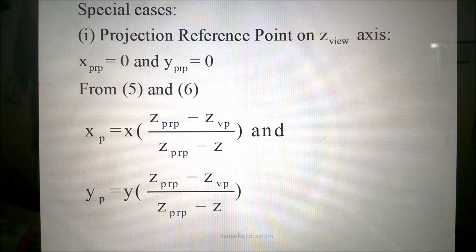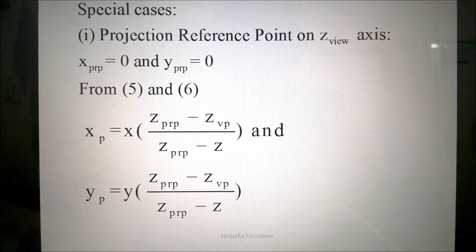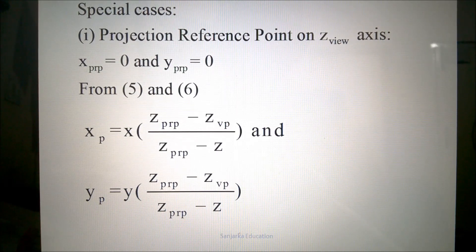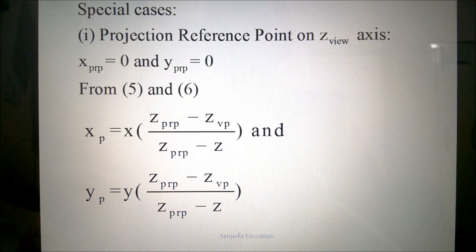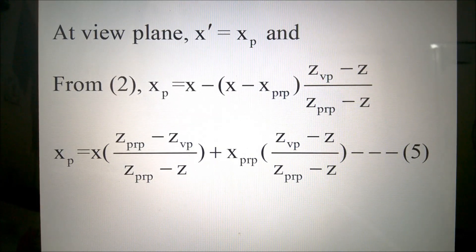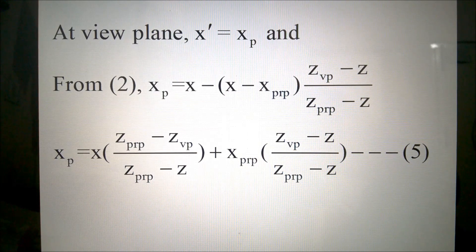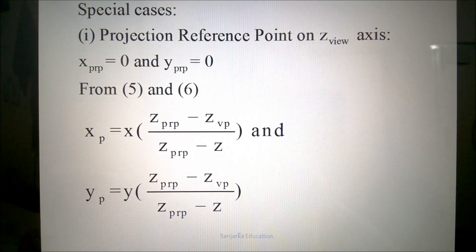Now I will discuss the special cases. The first special case is that the projection reference point is on the Z axis, which is also the viewing axis. On the Z axis, the X coordinate and Y coordinate are both 0. Therefore, the X coordinate and Y coordinate of the projection reference point are both 0. If we substitute into equations 5 and 6, this part is completely eliminated because X-PRP equals 0 and Y-PRP equals 0, giving a very simple equation.